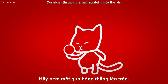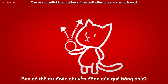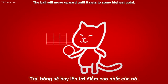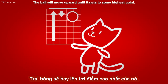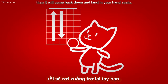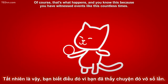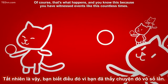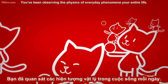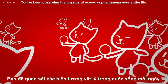Consider throwing a ball straight into the air. Can you predict the motion of the ball after it leaves your hand? Sure, that's easy. The ball will move upward until it gets to some highest point, then it'll come back down and land in your hand again. You know this because you have witnessed events like this countless times — you've been observing the physics of everyday phenomena your entire life.